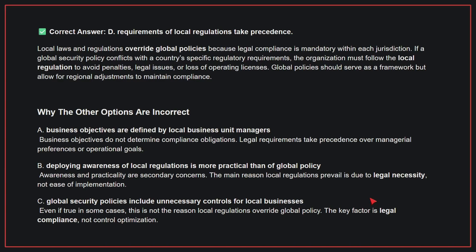C: Global security policies include unnecessary controls for local businesses. Even if true in some cases, this is not the reason local regulations override global policy. The key factor is legal compliance, not control optimization. Therefore, the correct answer is D.